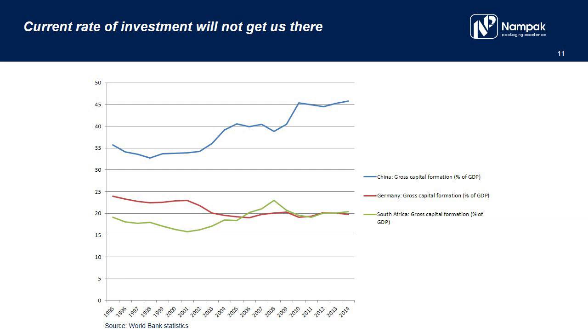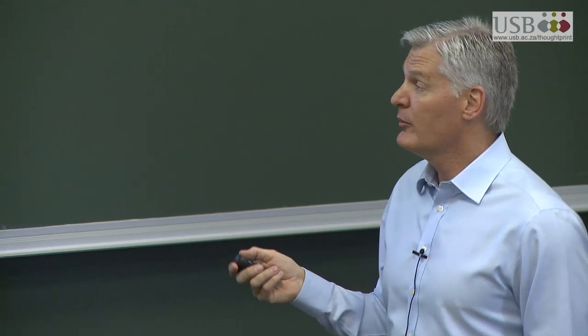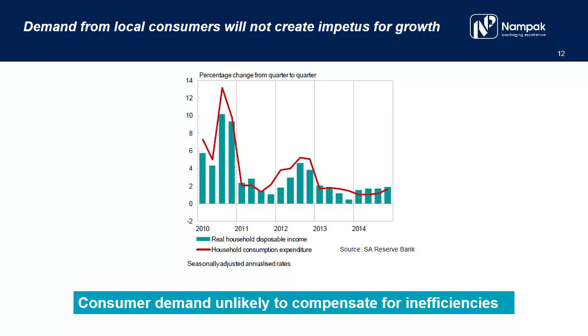We need to address some infrastructural issues. If you look at the rate of gross capital formation as a percentage of GDP and you compare China with South Africa — China is the blue line on top — we are investing like a fully developed economy. We're not investing like a growing, developing country.